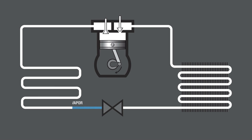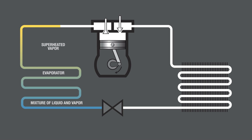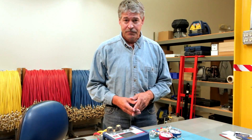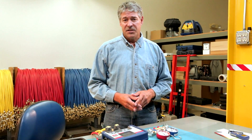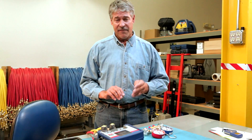As refrigerant enters the evaporator, it's in a liquid state. As heat is added to the liquid, it will turn to a vapor at its boiling point or saturation temperature. After the refrigerant has boiled to vapor, any temperature of the vapor above the saturation temperature is the superheat. Superheat is then any temperature of a gas above the boiling point for that liquid. The superheat calculation lets you know if the amount of refrigerant flowing into the evaporator is appropriate for the load.